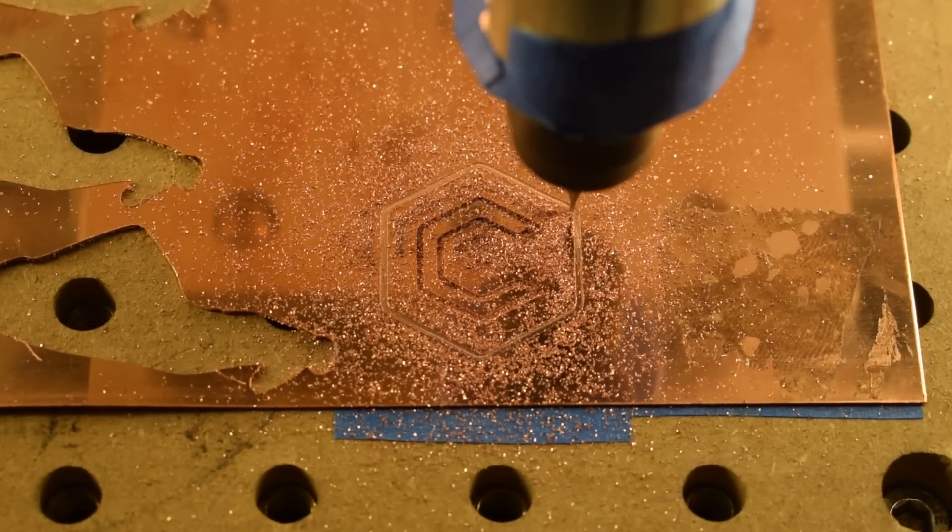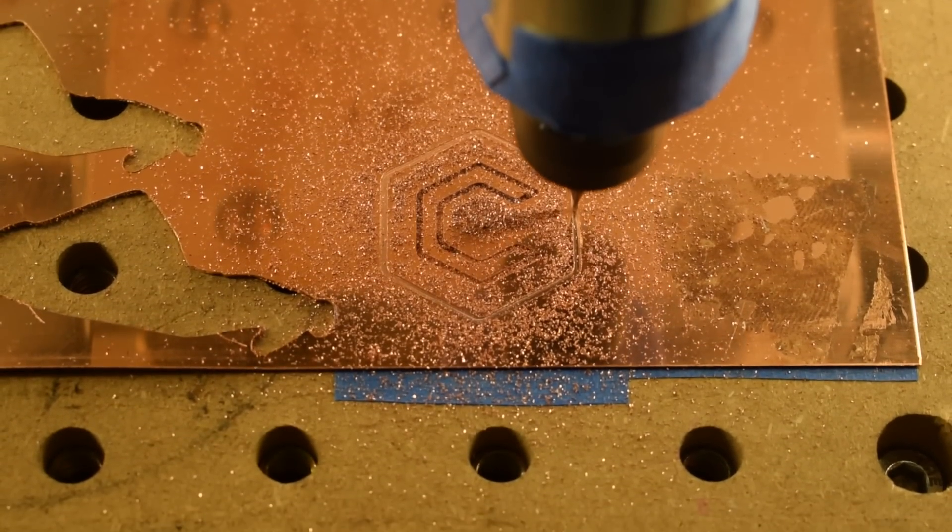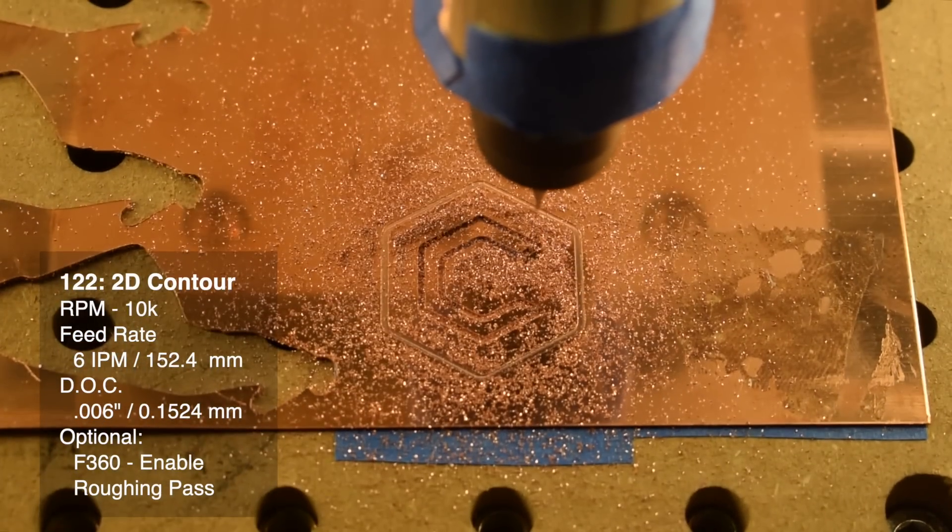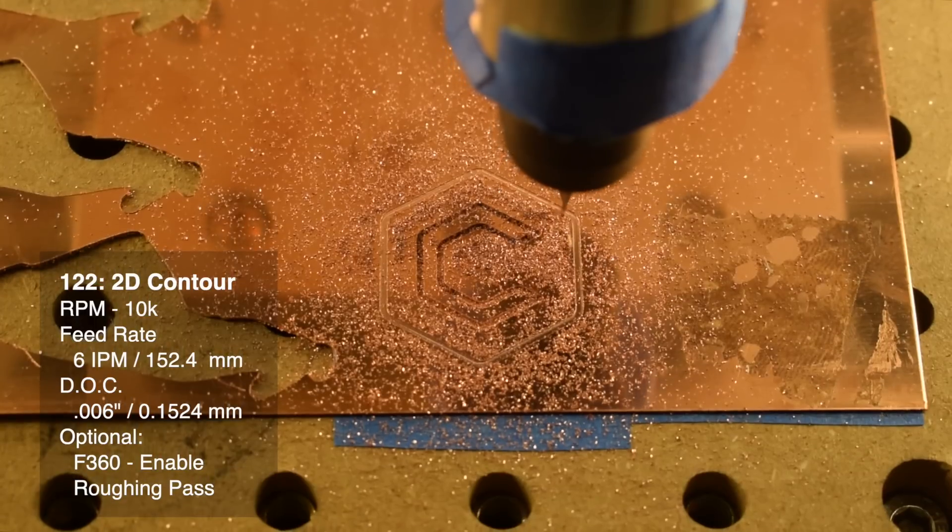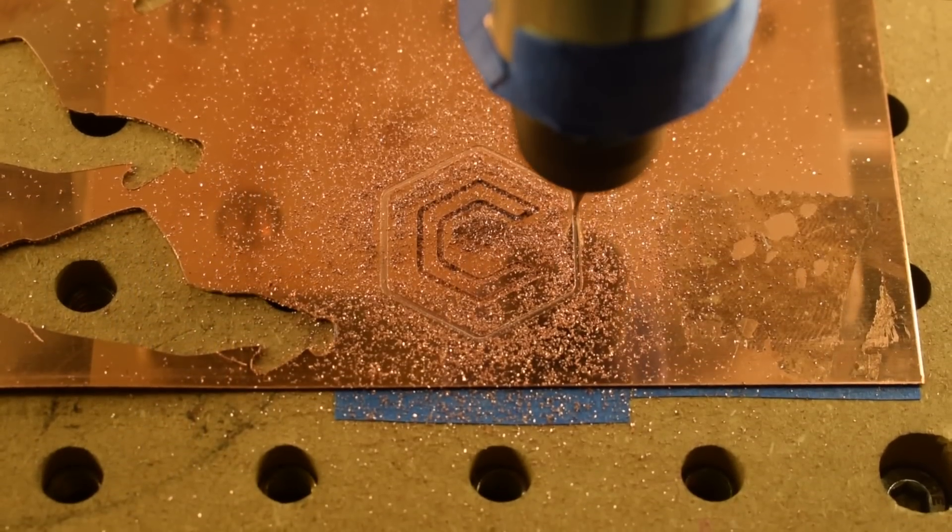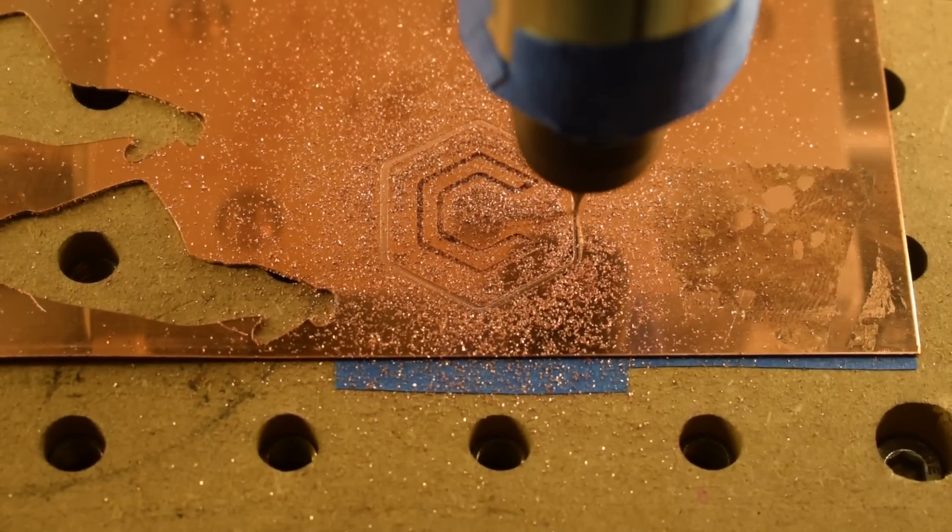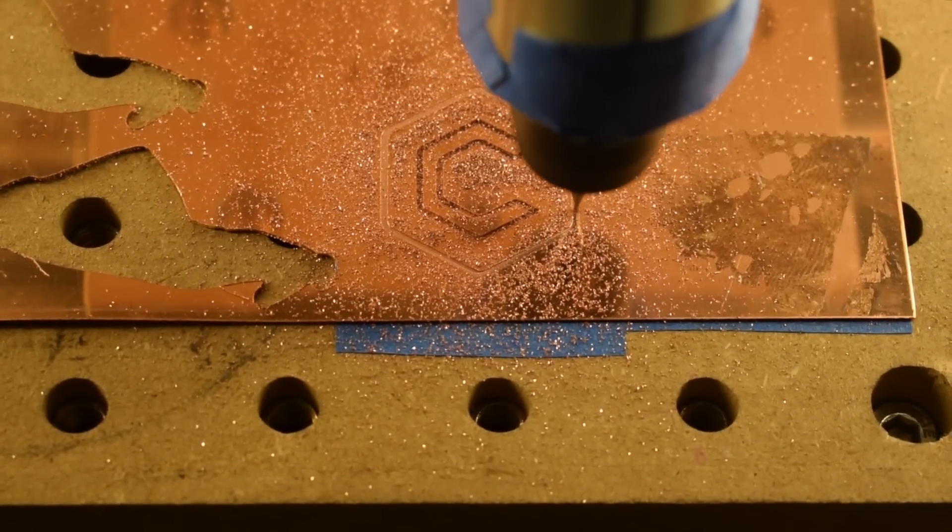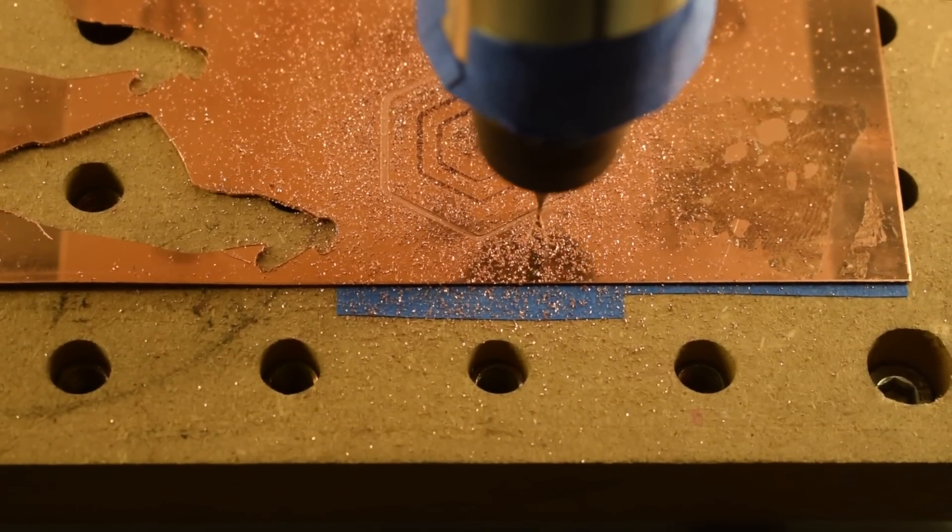The cutting recipe I'm using here is what I call the 6-6 rule of thumb. 6 inches per minute, 6 thou depth of cut. With a tiny end mill like this, your chip load should be well under a thou, usually between 2 to 4 ten thousandths of an inch. Running at 10,000 RPM puts us right in the middle of that range at 3 tenths per tooth.